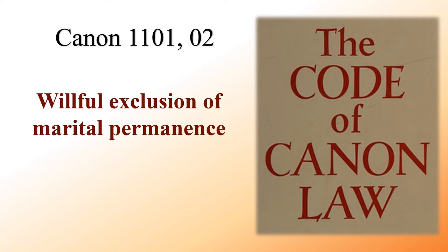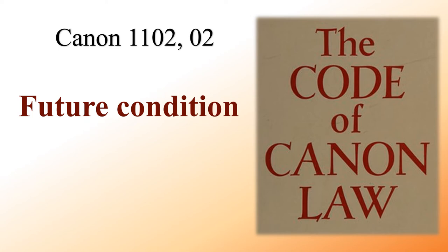Future condition: You or your spouse attached a future condition to your decision to marry. For example, you will complete your education, your income will be at a certain level, or you will remain in this area — and then get married.